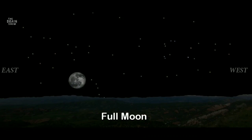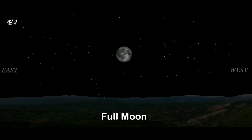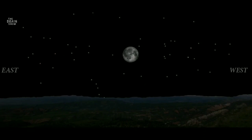A full moon occurs two weeks after the new moon. As the sun sets in the west, the moon rises. As the sun rises at dawn, the moon sets.